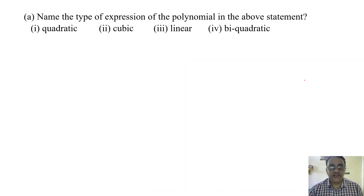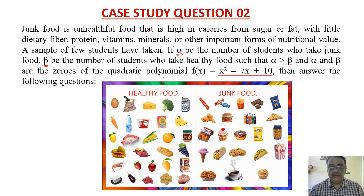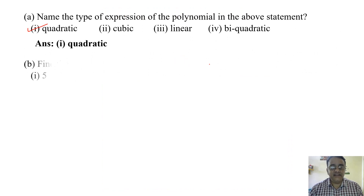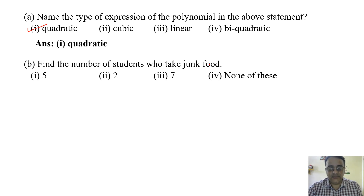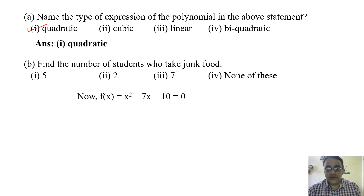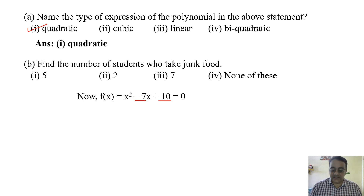First question: Name the type of expression — quadratic polynomial. Now find the number of students who take junk food, meaning find alpha. We will find the zeros by using the factorization method — equate with zero. The product is plus 10 and sum is minus 7, so factors of 10 whose total is 7 are 5 and 2.